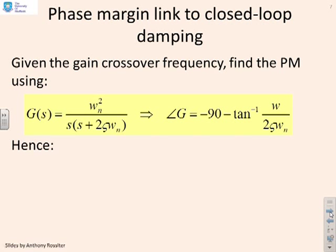Now, to find the phase margin, we need the gain crossover frequency, then find the argument of G at this frequency. It's minus 90 minus tan inverse of omega over 2 zeta omega_n.